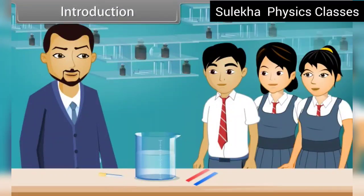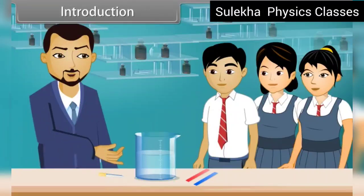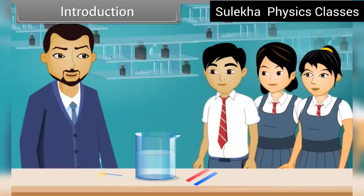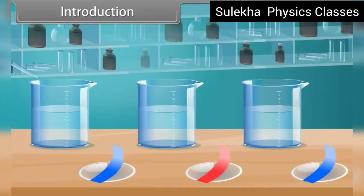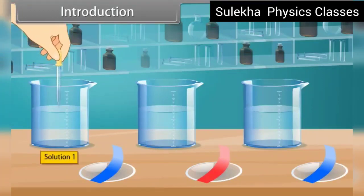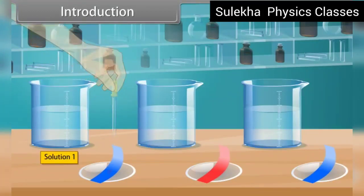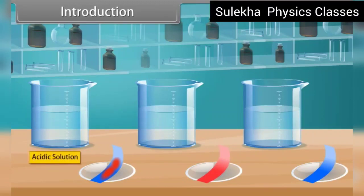Hello students. Good morning, sir. Very good morning. Today we will perform an experiment to identify the acidic, basic, or neutral solution. First, put a drop of solution 1 on the blue litmus paper. It turns into red. It shows acidic behavior.